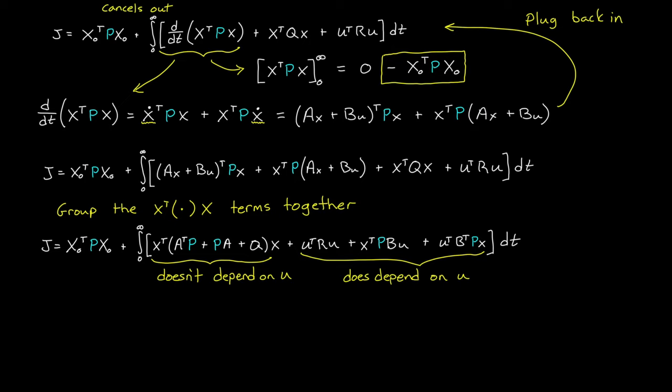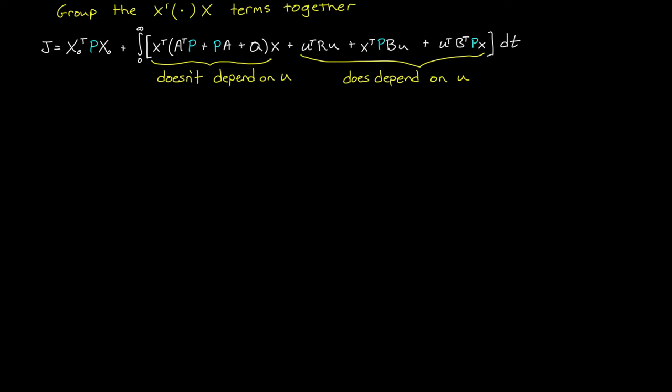But here we can take advantage of our second cool technique called completing the square. Notice that these three terms have this form of U squared plus some terms with just U in it. And in general, we can turn this into a square. That is U plus some unknown value squared. And if we expand this, we get U squared plus some term with just U plus the unknown value squared.